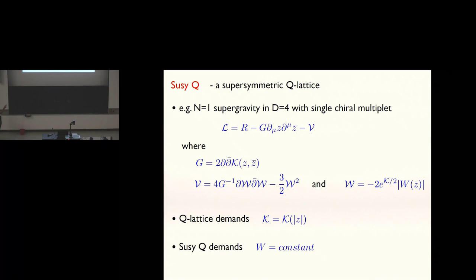N equals one supergravity coupled to a single scalar multiplet, we just have a Lagrangian like this. G is, so Z parametrizes a Kähler manifold, and G is a metric on it, so it's given by two derivatives on the Kähler potential. V is a potential constructed out of this W in this way, and W is raised for superpotential by a factor of e to K on two. If you want to look at supergravity and you want to look at Q-lattice constructions, your bulk action should have a global U(1) symmetry.